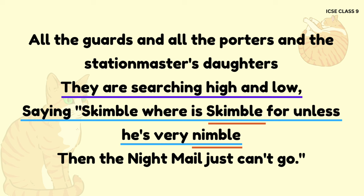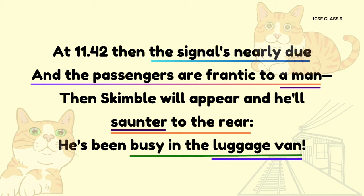In the same line, line number 7, the word 'nimble' rhymes with 'Skimble,' and it shows an example of assonance by using repetition of vowel sounds.